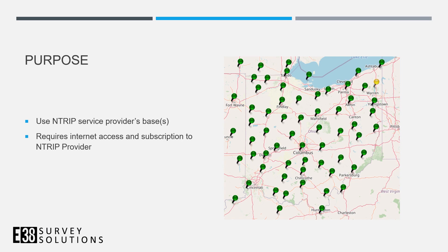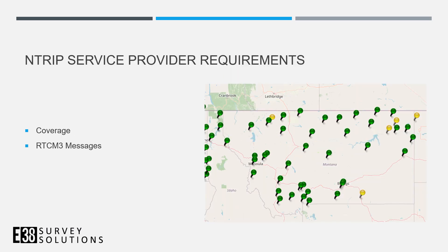NTRIP service providers give us access to their network of base stations in a given region. They broadcast their corrections using NTRIP, so it saves us from having to set up a base since we're using their base stations. If you're looking to pair the RS2 with an NTRIP provider, make sure their coverage is sufficient for the area you are working and make sure they're sending RTCM3 messages.